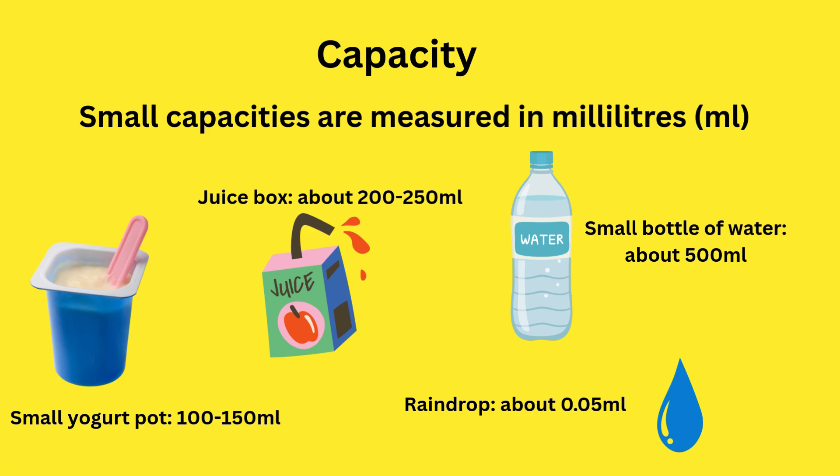Small capacities are measured in millilitres. A small yogurt pot is about 100 to 150 millilitres. A juice box is about 200 to 250 millilitres. A single raindrop is about 0.05 millilitres. A small bottle of water is about 500 millilitres.